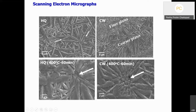In the case of aged samples, a typical star-like feature appears where martensitic plates nucleate from the intermetallic precipitates. This is true for both the homogenized quenched and cold work samples, and is evident both in high-magnification and optical microstructures.